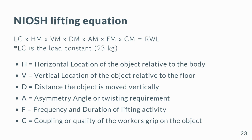H equals horizontal location of the object relative to the body. V equals vertical location of the object relative to the floor. D equals distance the object is moved vertically. A equals asymmetry angle or twisting requirement. F equals frequency and duration of lifting activity. C equals coupling or quality of the worker's grip on the object.